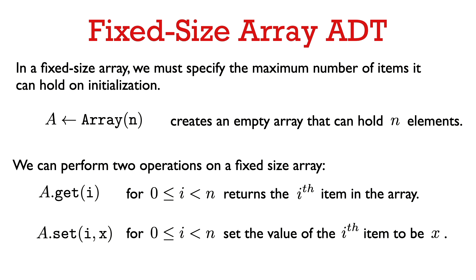We're going to start with the abstract data type for a fixed-size array. We just have three operations. We can create a fixed-size array, specifying its capacity, that is how many elements it can hold.